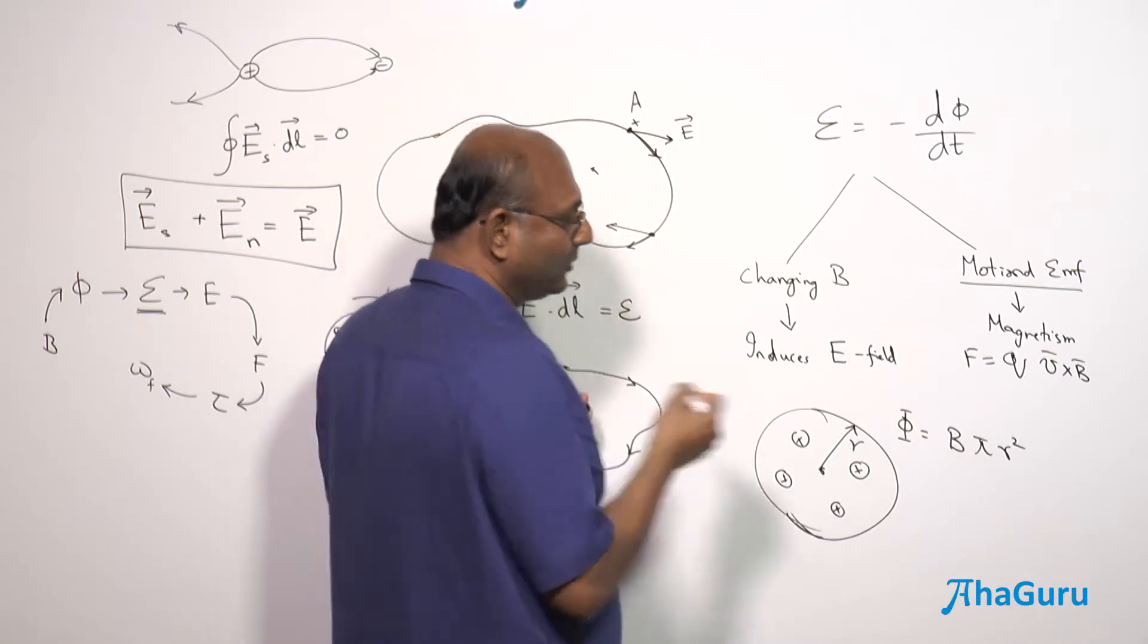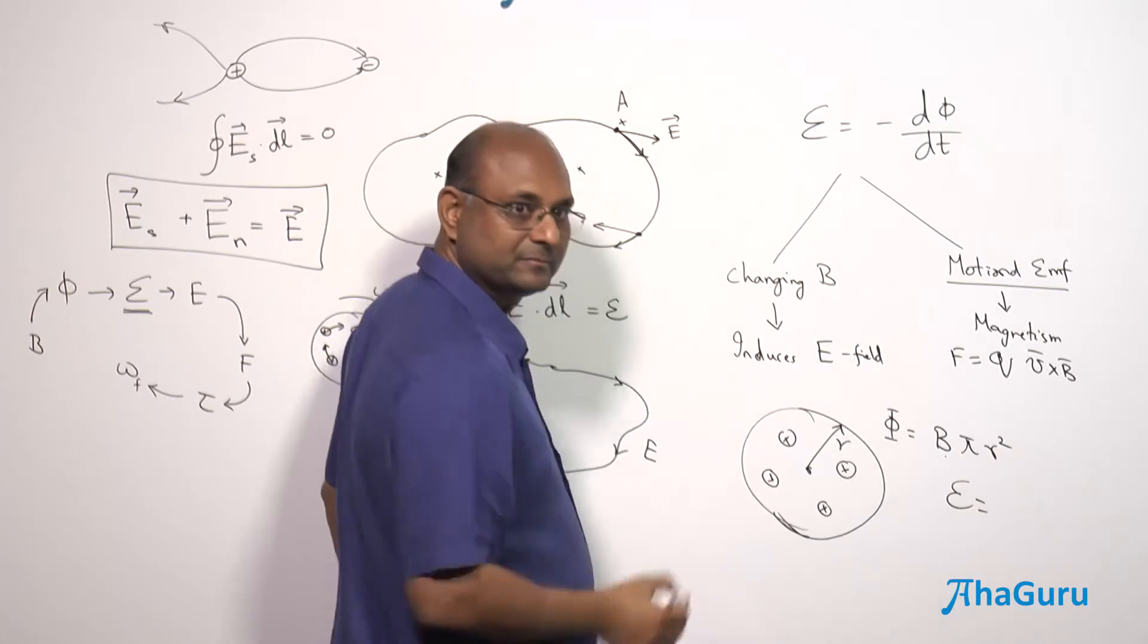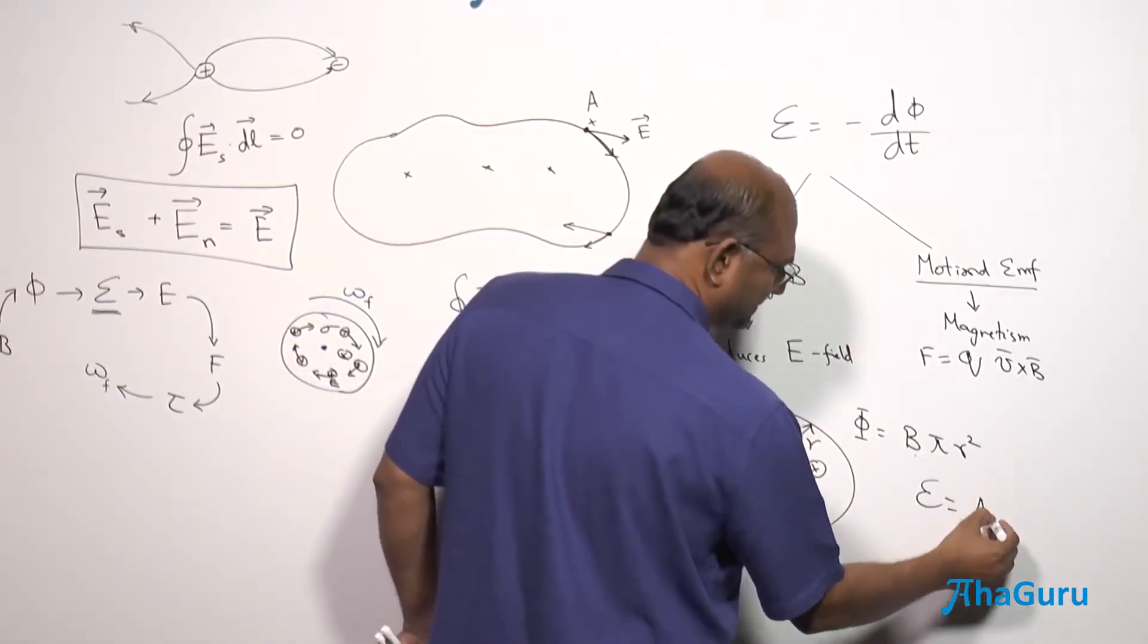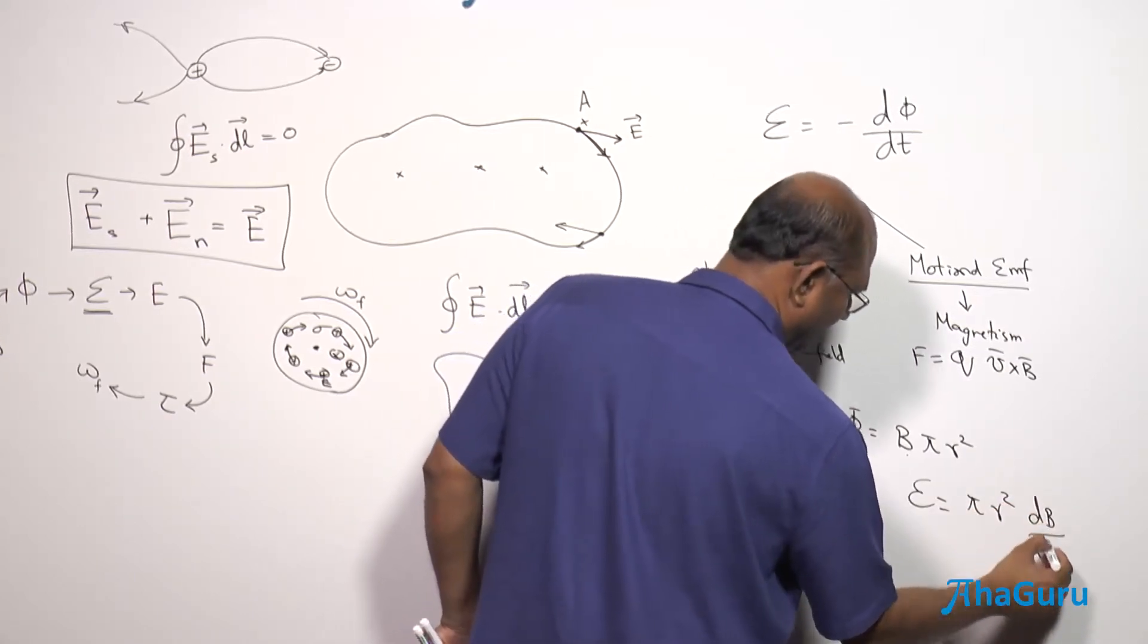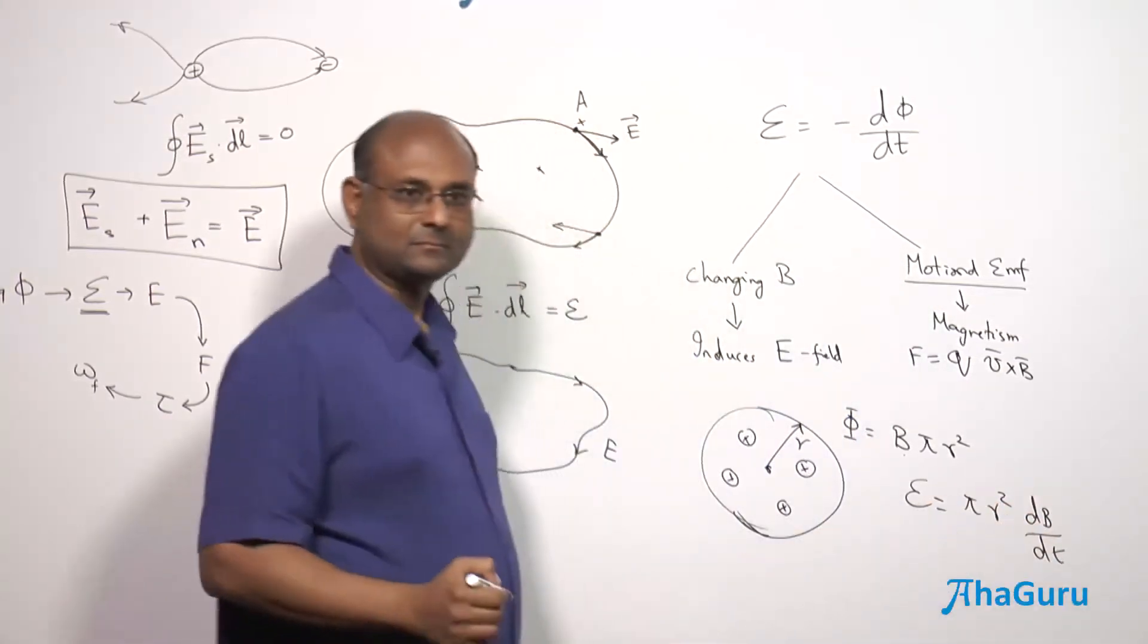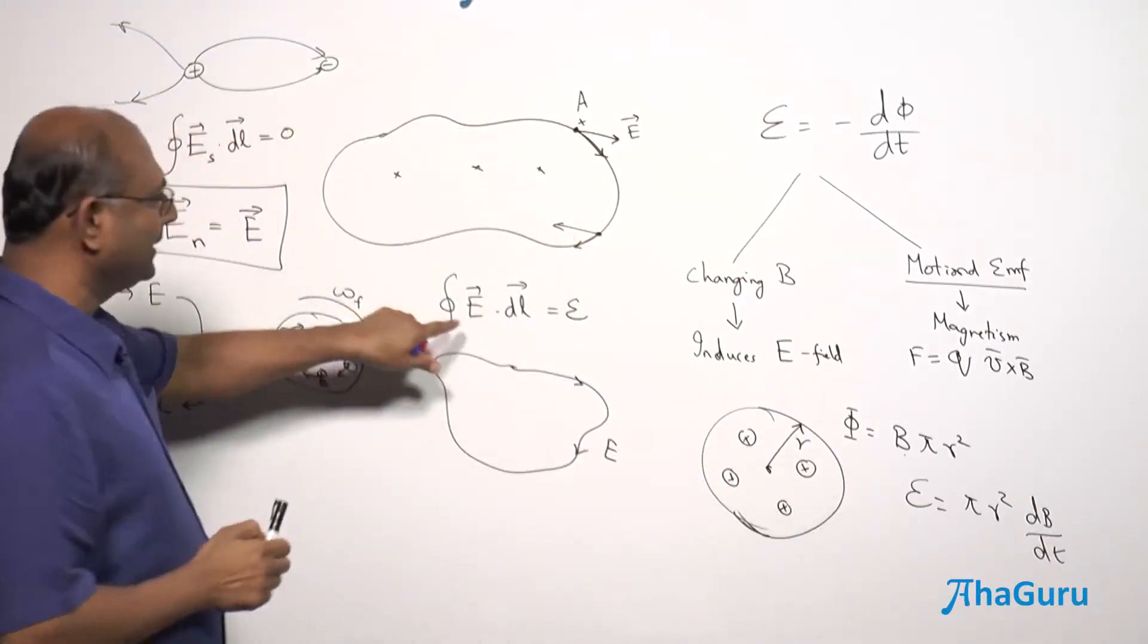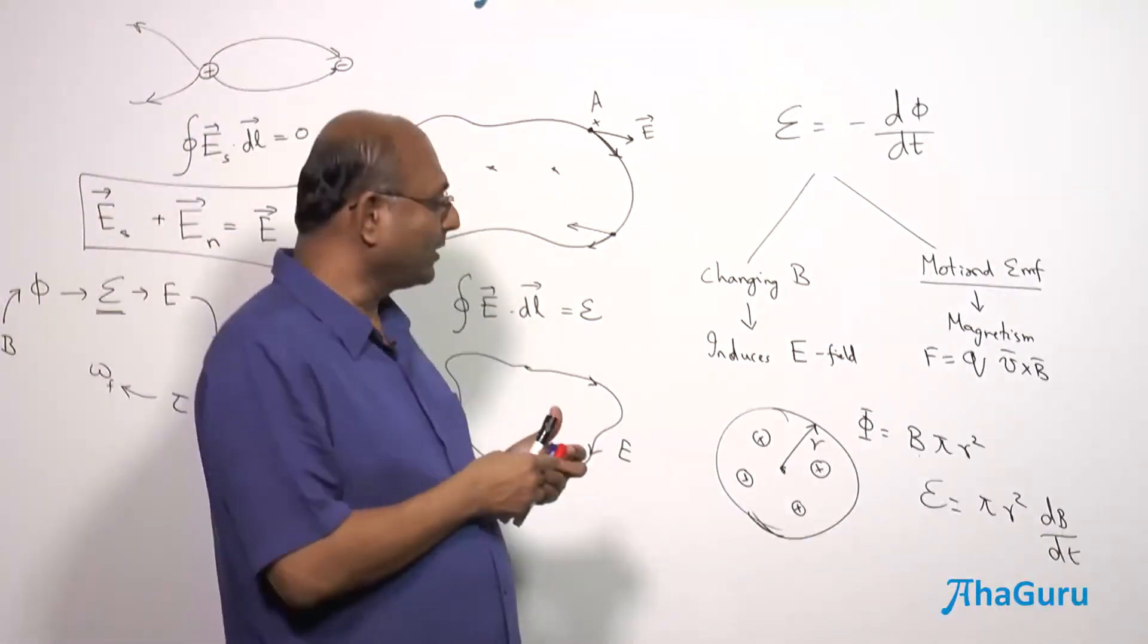Now, when B basically goes to 0, which means there is an EMF in this loop. How much will the EMF be? dΦ by dt, pi R square, dB by dt. I know this EMF must be equal to integral E dot dL. But what is E? Let's think about what is E.